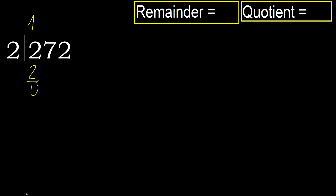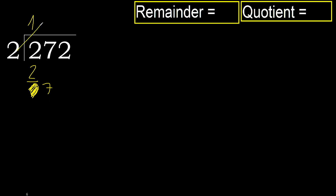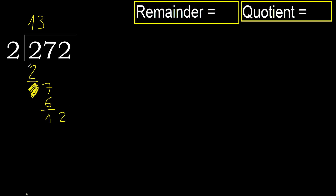Ok, subtract. Next, eliminate 0 on this side. 7 — 7 is not less, ok. 2 multiplied by 4 is 8, which is greater. 2 multiplied by 3 is 6, which is not greater. Ok, subtract. Next: 12. 2 multiplied by 6 is 12, which is not greater. Subtract. Next.